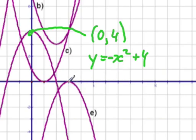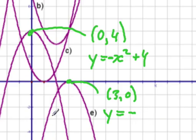And for e, our vertex here is at 3, 0. So our equation is going to be y equals negative, because the parabola opens downward, and it would be x minus 3 squared.